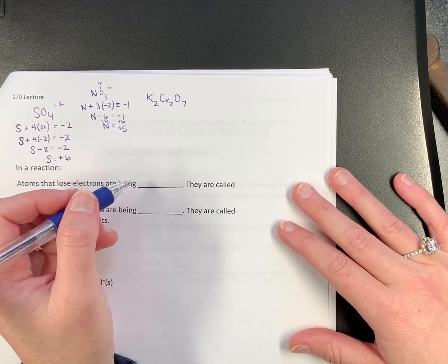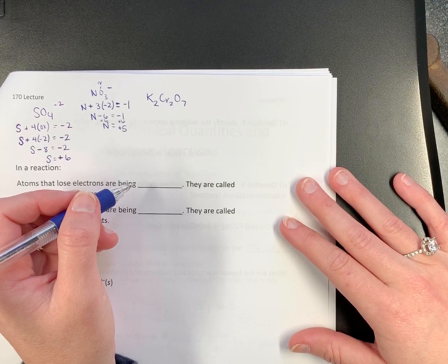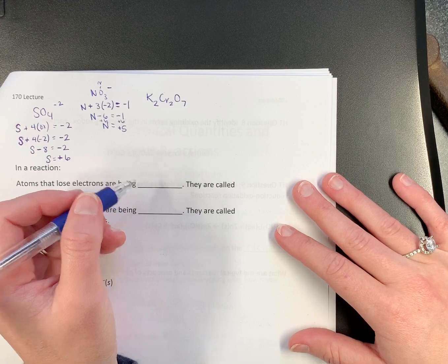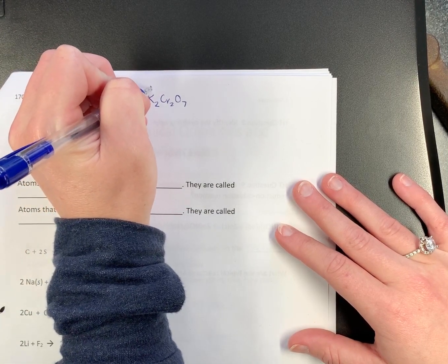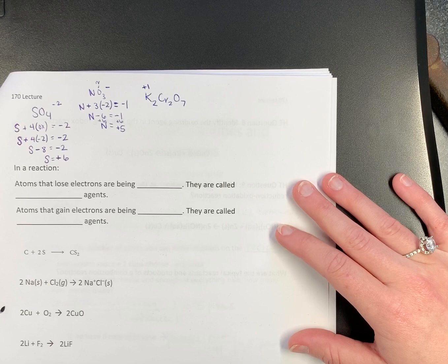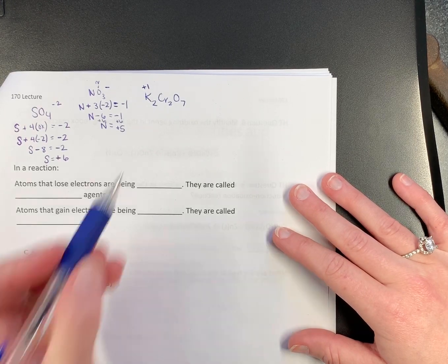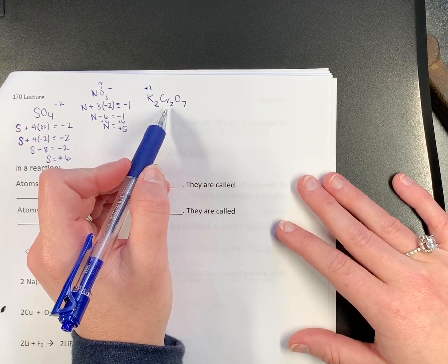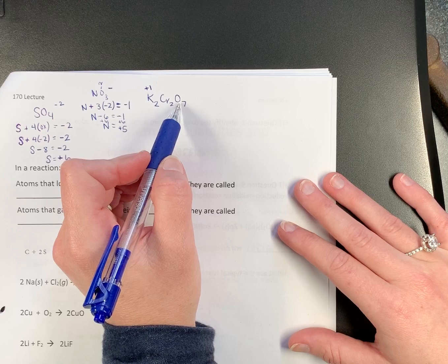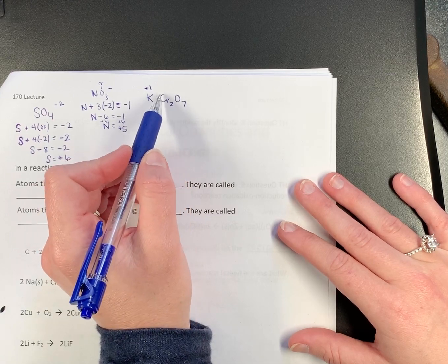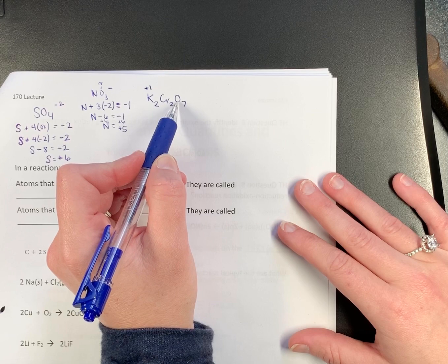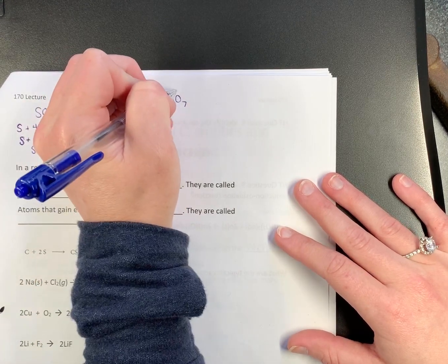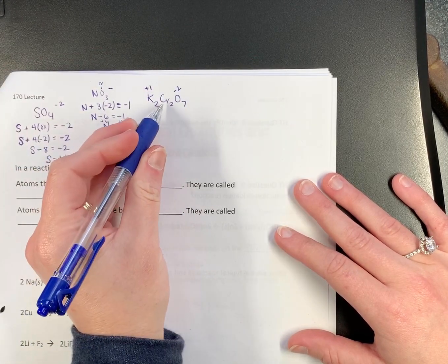Do we have any metals? Yes, we do. Can we put a charge on which one? Potassium. So we know potassium is going to be plus 1 according to the periodic table. Chromium could be several things. We don't know it just yet. And we know it's probably going to be positive. And we know oxygen according to the table is what? Negative 2.